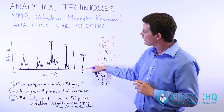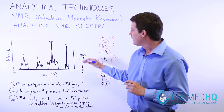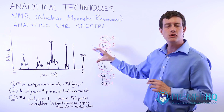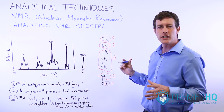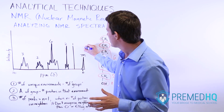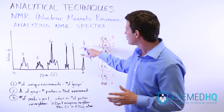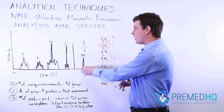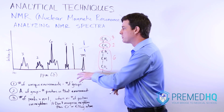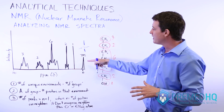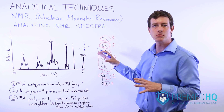Always be aware of the peak located at exactly zero ppm. This is occupied by tetramethylsilane, which is simply a marker used to calibrate your NMR spectra. Tetramethylsilane is silicon with four methyl groups. You will always see this peak — don't interpret it as an NMR group, but instead as the calibration marker.